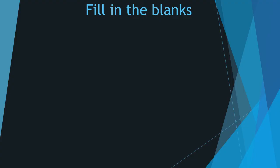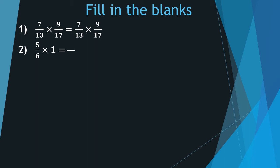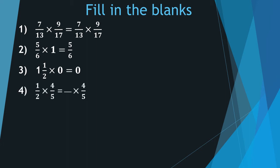Let us practice. Fill in the blanks — what fraction makes this statement true? Question 1: 7 upon 13 multiply dash is equal to dash multiply 9 upon 17. Recalling the first property, if two fractional numbers are multiplied in either order the product remains the same, so the first answer is 9 upon 17 and the second answer is 7 upon 13. Question 2: 5 upon 6 multiply by 1 is equal to dash. Using property number 2, the answer is 5 upon 6. Question 3: 1 1 upon 2 multiply by dash is equal to 0 — the answer is 0. Question 4: 1 upon 2 multiply 4 upon 5 is equal to dash multiply 4 upon 5. Using property number 1, the answer is 1 upon 2.